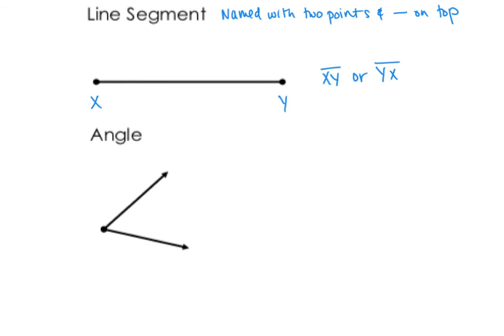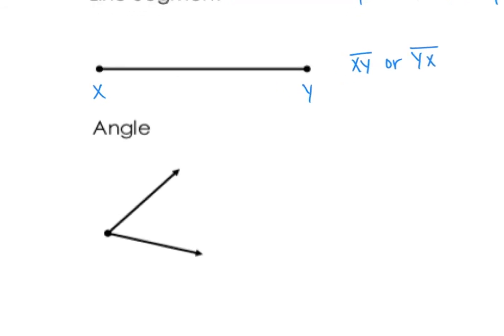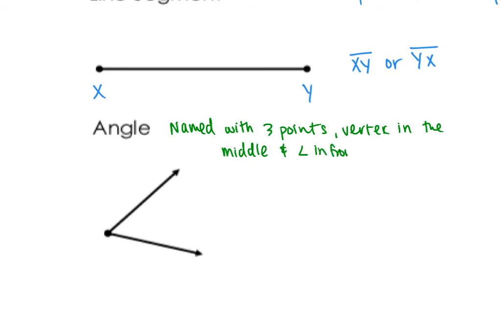The last one is an angle. An angle is named with three points, and the vertex has to be in the middle. We use an angle symbol in front. The vertex is the point of the angle, and that letter always has to be in the middle. So if this is angle S, the vertex is T, and this point is U, we would call it angle STU, or you can reverse the order to say UTS, as long as the middle letter is your vertex.